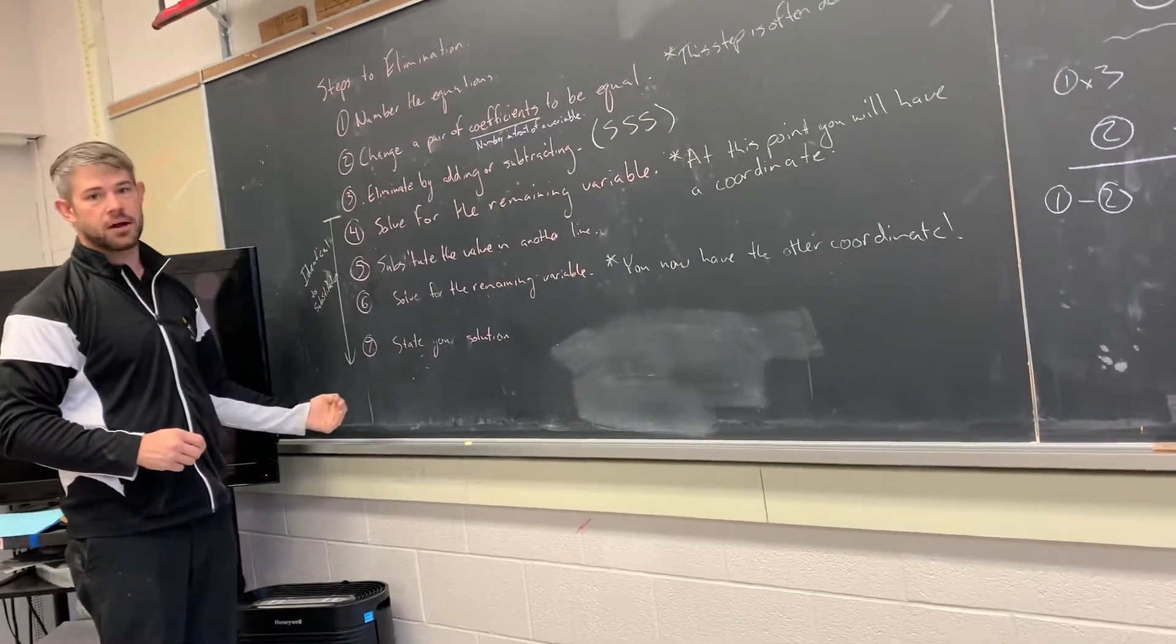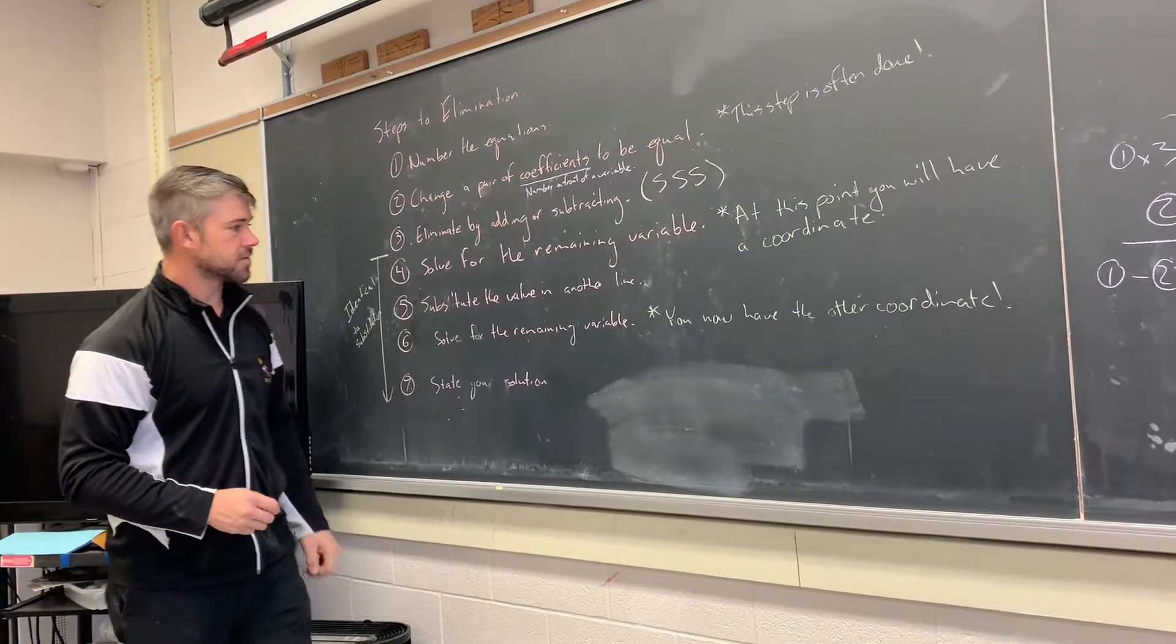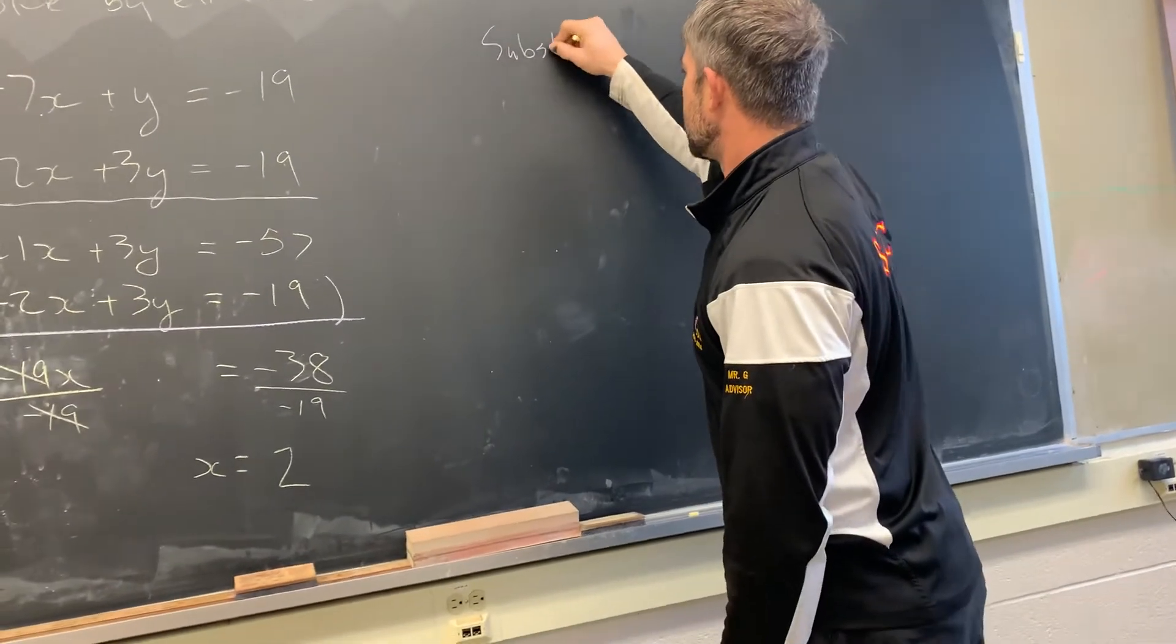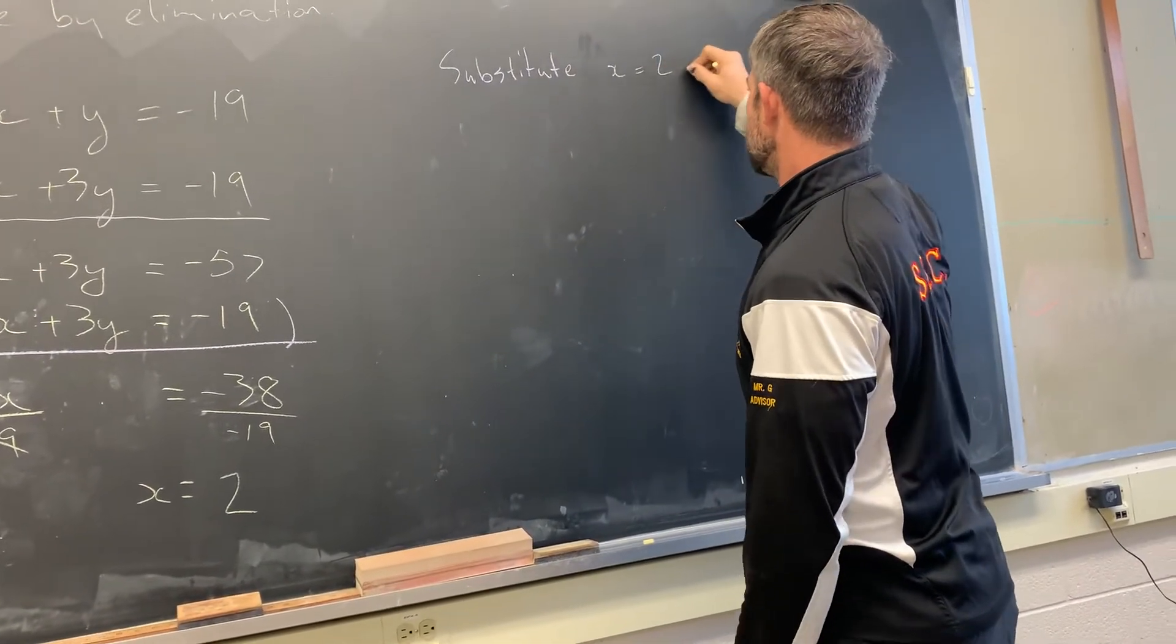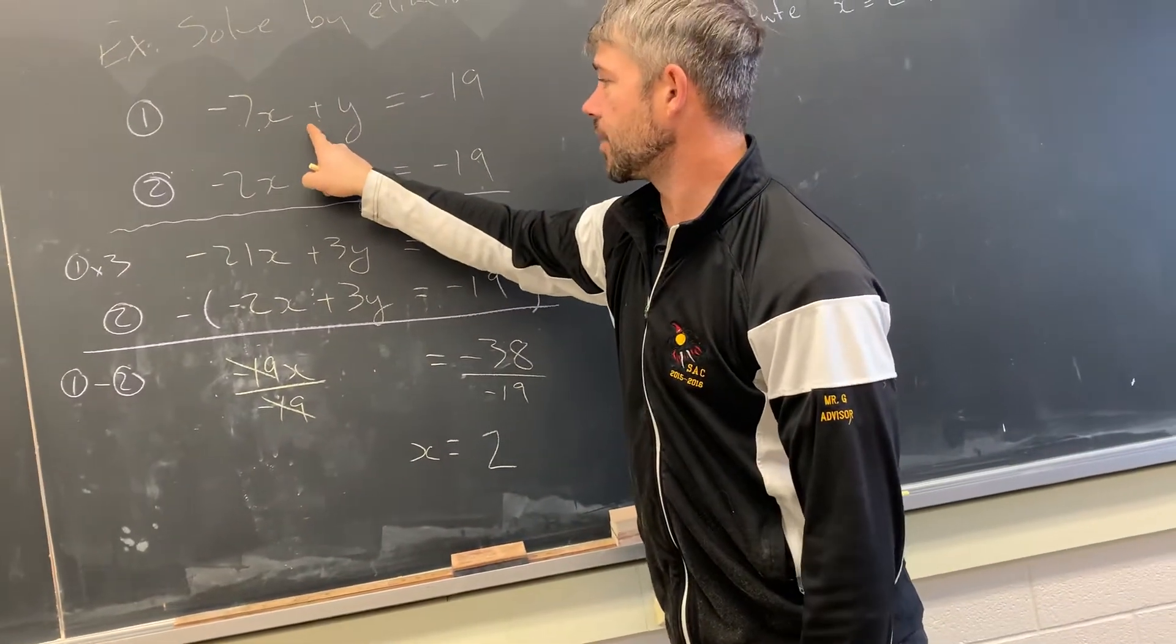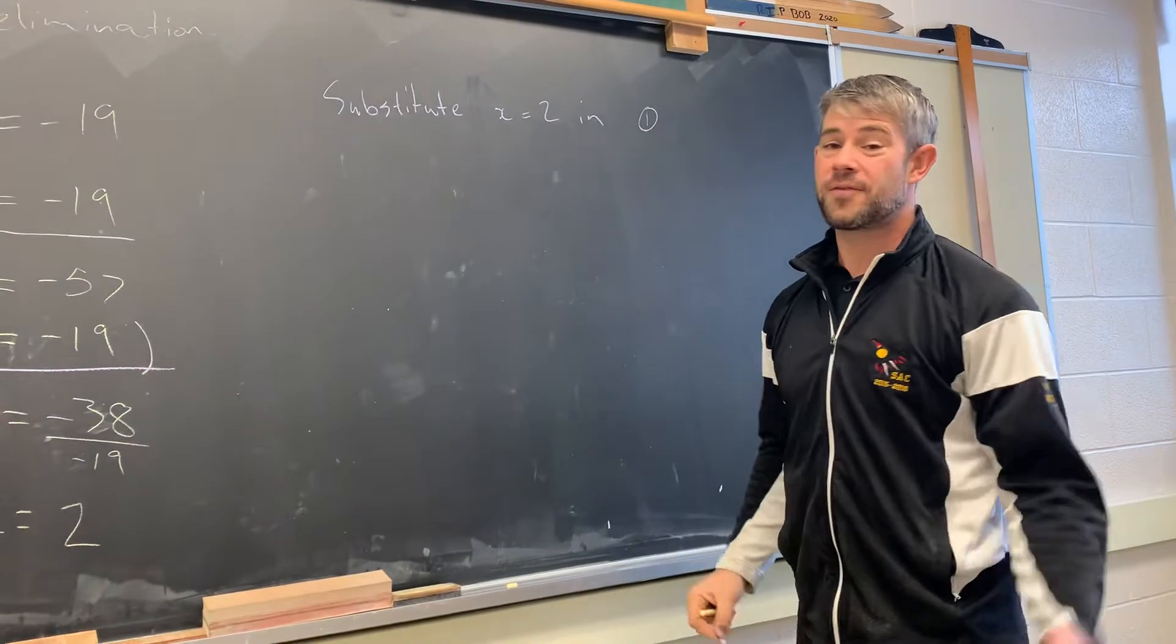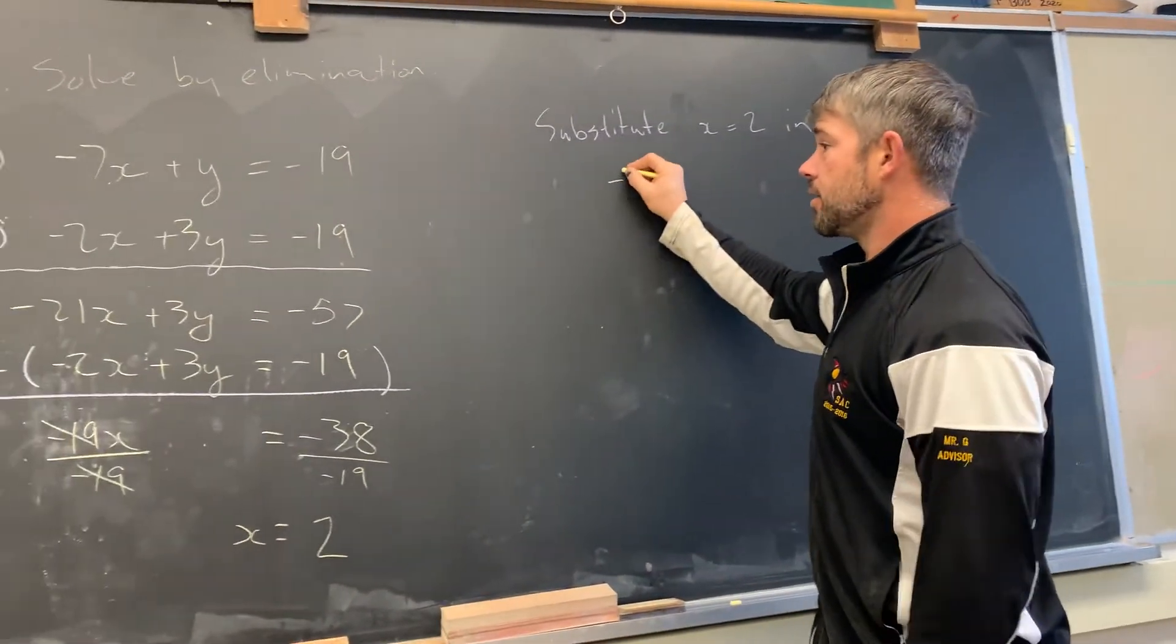So now we're off to step 5. And this is very similar to our substitution steps. In fact, everything from step 4 down is identical to solving by substitution. So step 5 says substitute that value in another line. So I'll go and write substitute x equals 2. And I get to pick whichever line I want. I think it's probably going to be easiest to pick line 1 because there's less numbers going on. So I'm going to substitute into line 1. Although if I picked line 2, I would have the exact same answer.